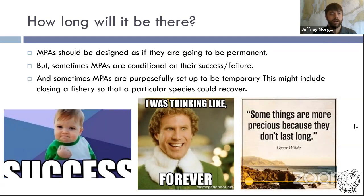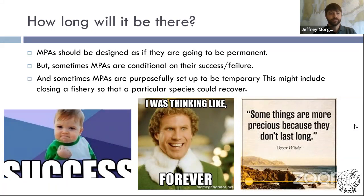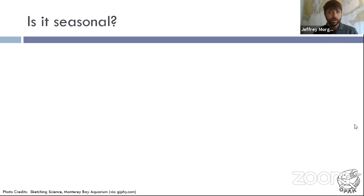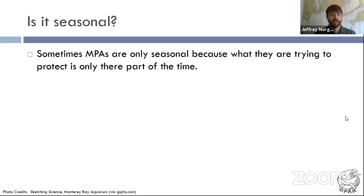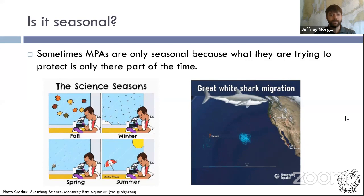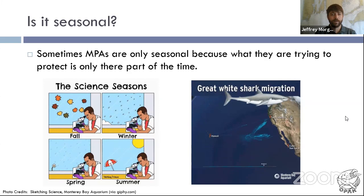Occasionally we set up marine protected areas for a short period of time — something like the cod fishery in New England, where there are temporary closings on quotas where we don't let people fish, but we're not saying they're never going to be able to fish. Is it seasonal? If we're thinking about protecting right whales in Cape Cod Bay, we don't need to shut down that part of the bay to ship traffic and fishing for the entire year because our right whales aren't there all year. So sometimes we can make marine protected area enforcement seasonal.